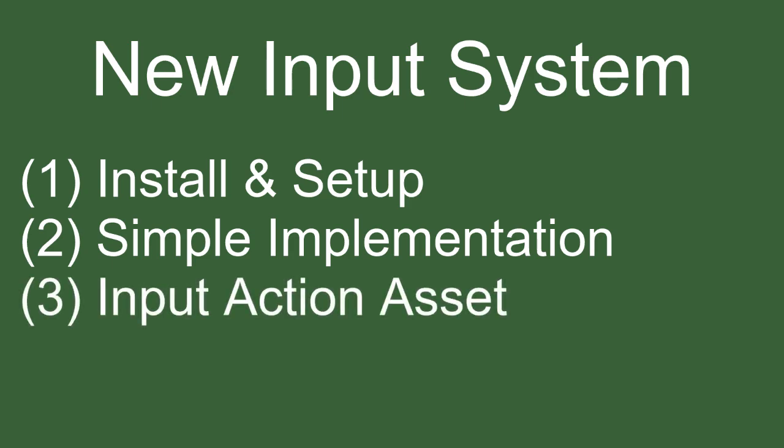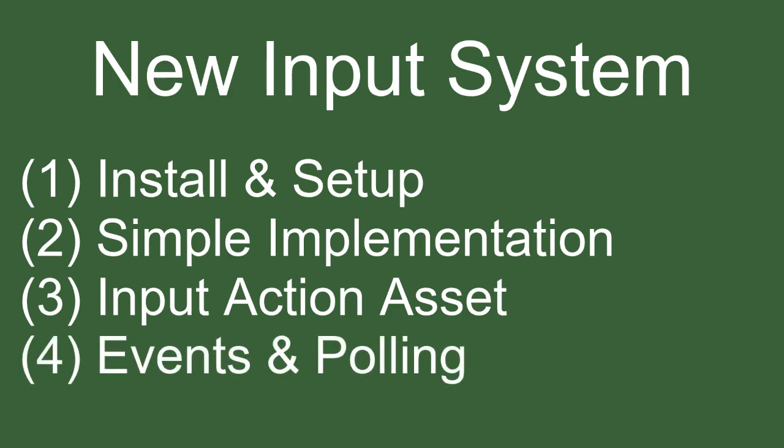Step three: we're going to be creating an input action asset so we can map certain inputs — keyboards, mice, gamepad, joystick, whatever you want — to different actions. Then for step four I'll show you how to use your input action mappings in your scripts, so your scripts don't care what controller you're using, just that you pressed jump, shoot, or move. For things like jumping we'll use events, and for things happening every frame like movement we'll use polling.